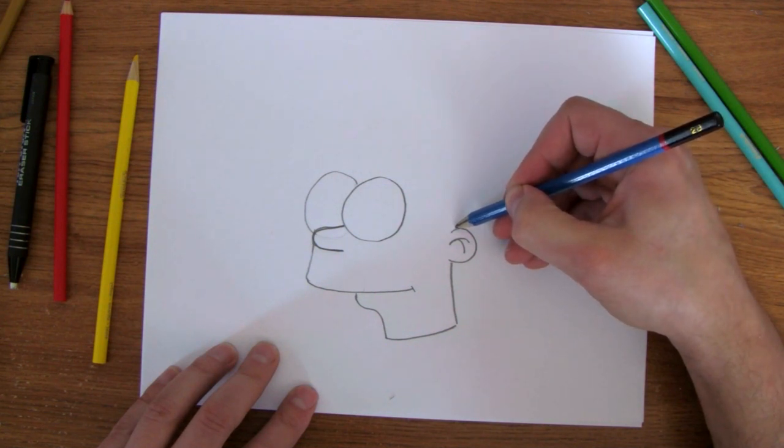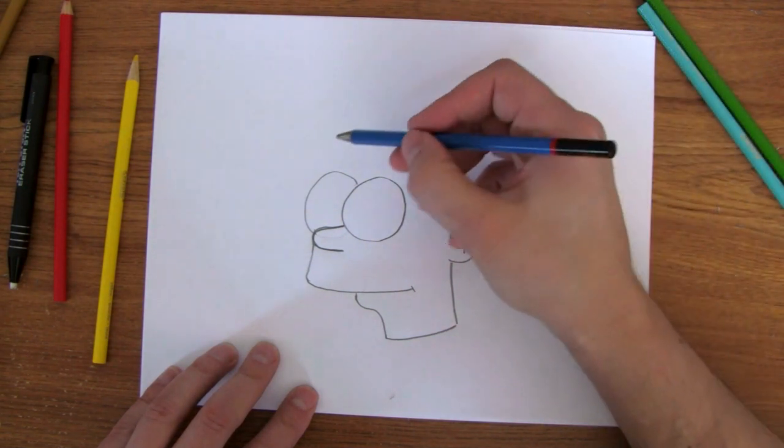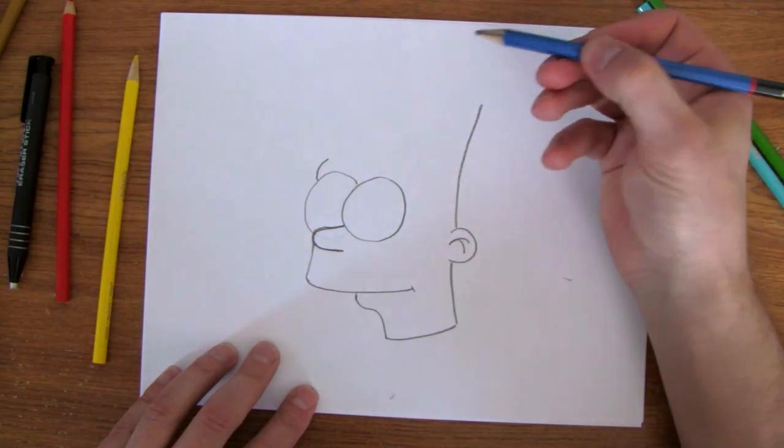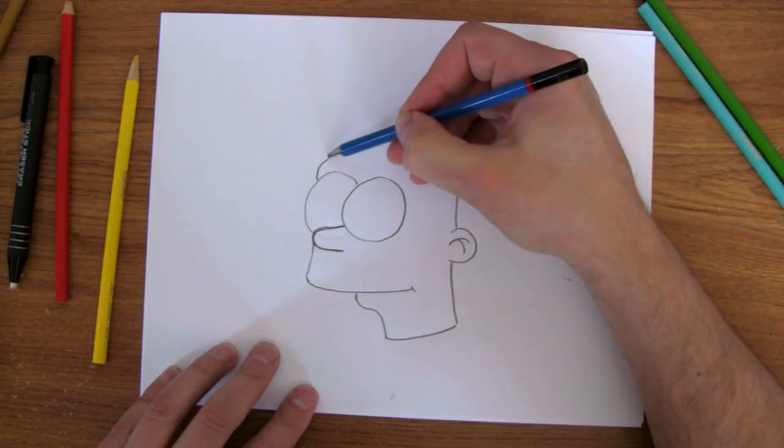Now, his hair. He's going to come up here. He's got an eyebrow. And the rest of his hair is going to meet this up here.